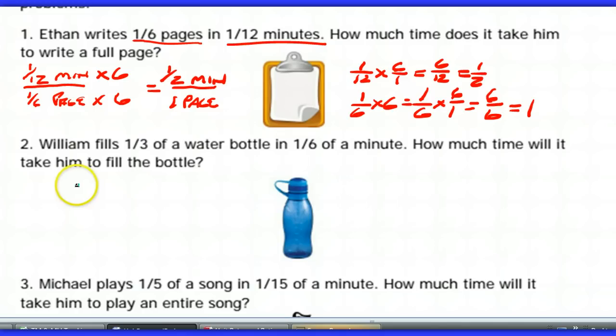With these problems, just make sure you set it up initially right. For instance, how much time will it take him to fill the bottle? So you want to know in your denominator how much time for one bottle. So you need to figure out how many minutes it's going to take to fill one bottle. Well, before you can figure out the unit rate, you have to take what you already know, one-sixth of a minute, put it over one-third of a bottle.